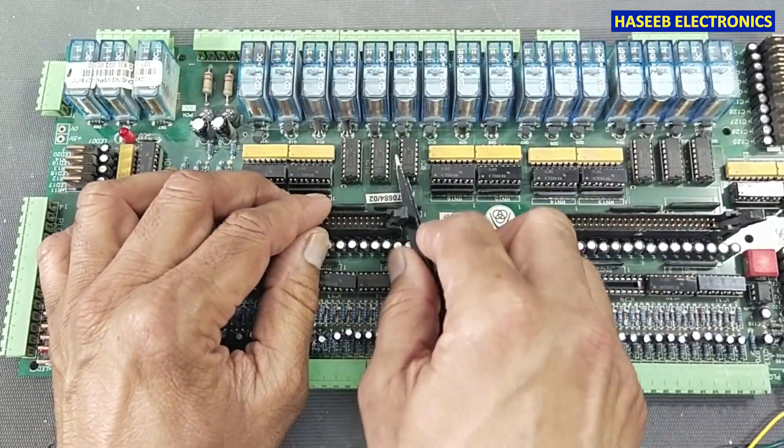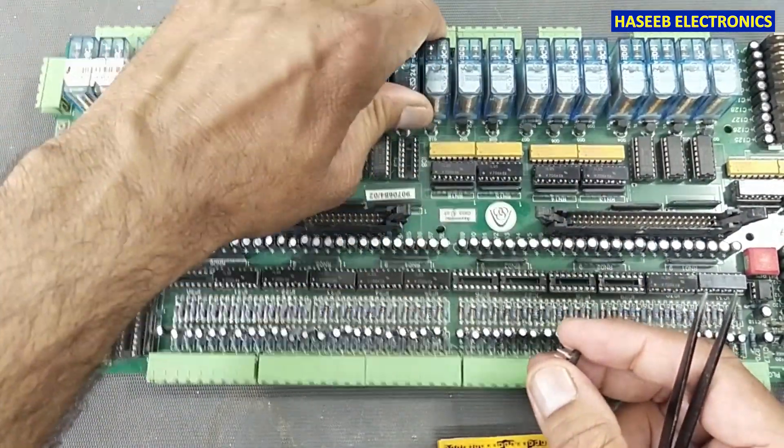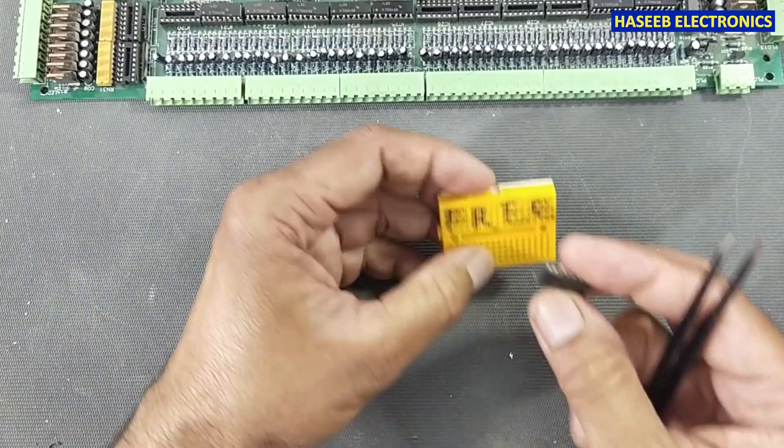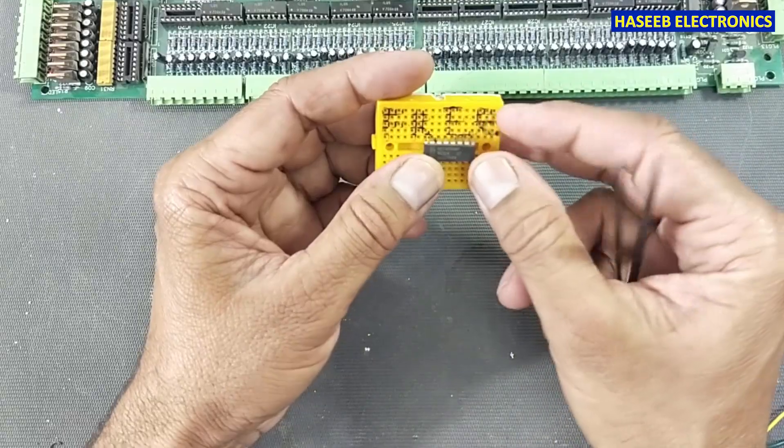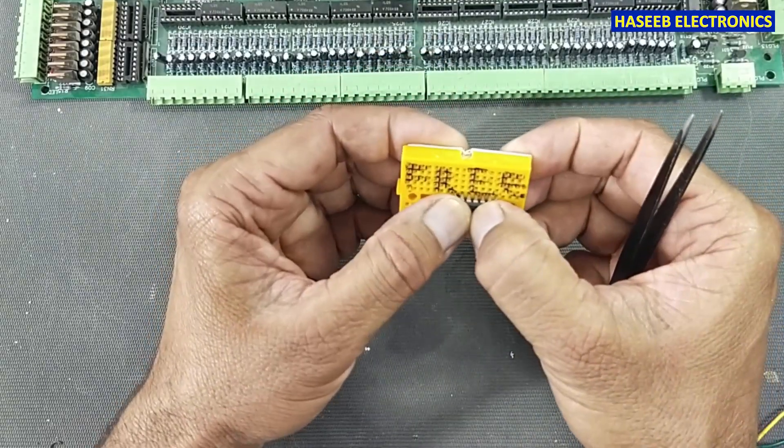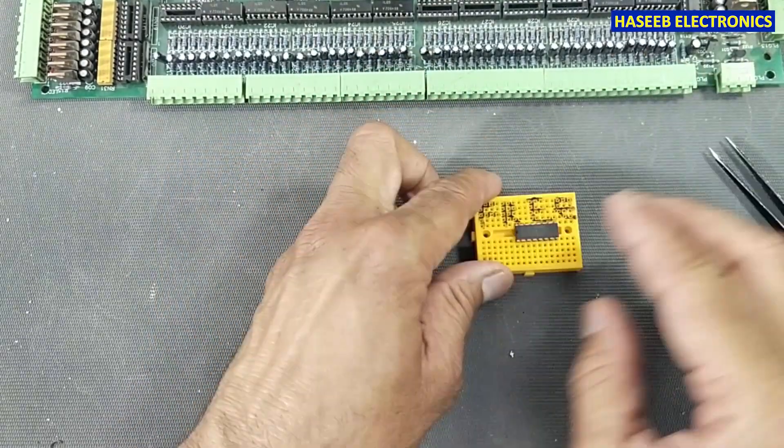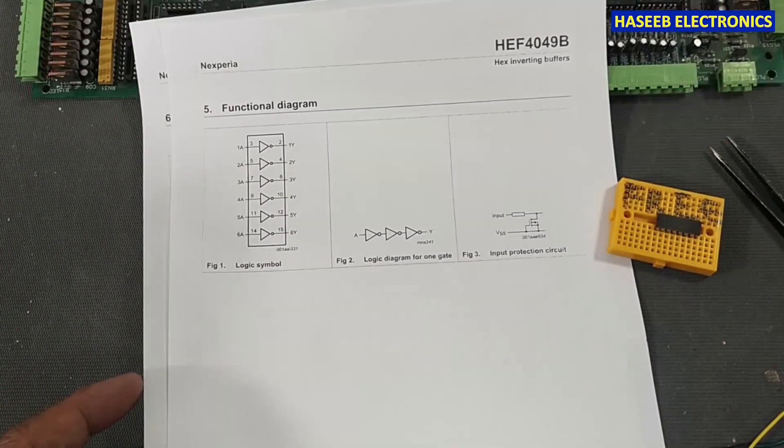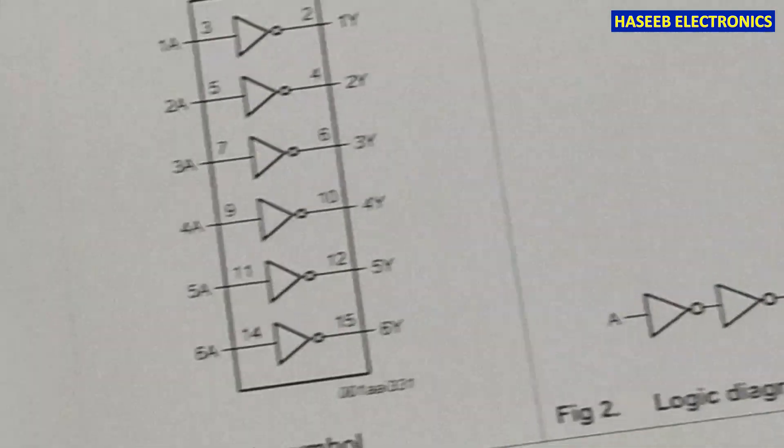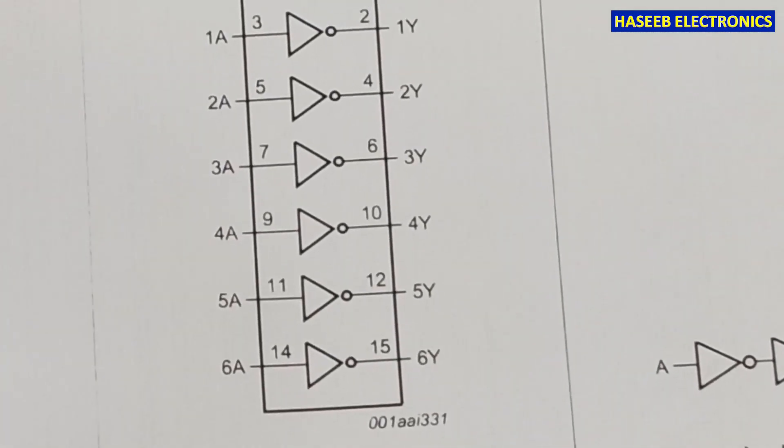How can we test CD4049? What is this and how can we test it using a multimeter? Today I will not use LEDs or other things, I will use a multimeter. If you see its circuit diagram and datasheet...